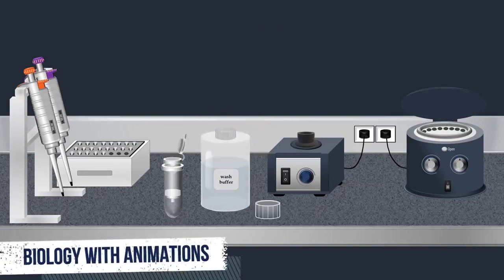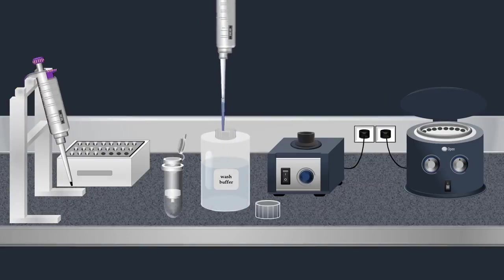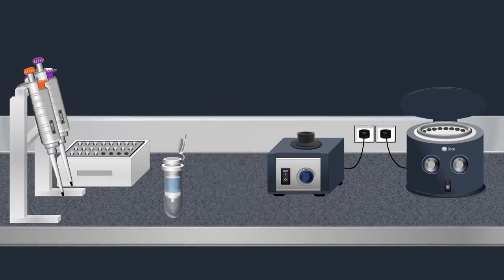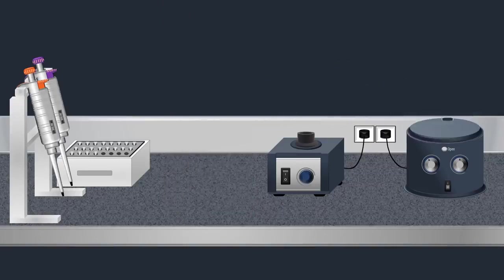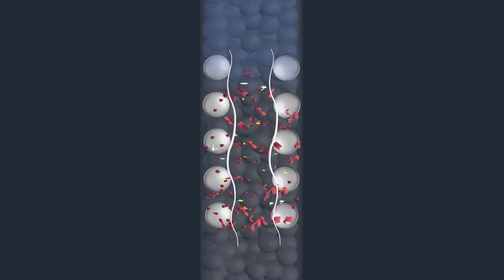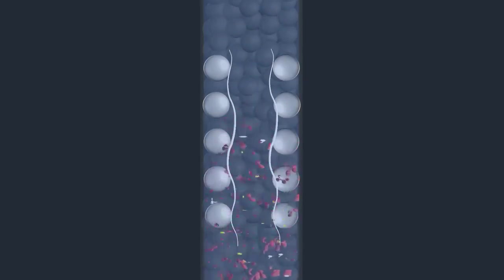Then a wash buffer is added. The column is put in a centrifuge again, forcing the wash buffer through the membrane. This removes any remaining impurities from the membrane, leaving only the RNA bound to the silica gel.